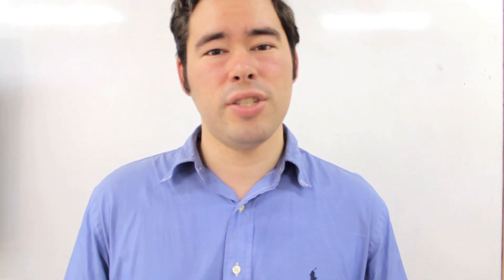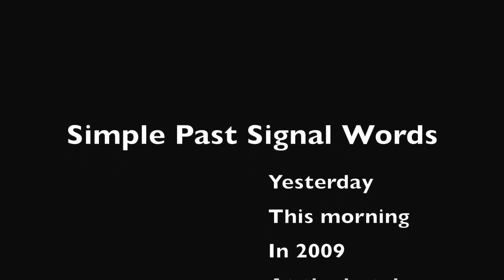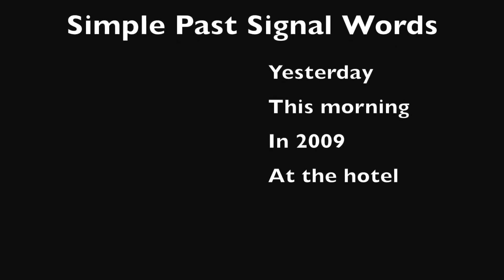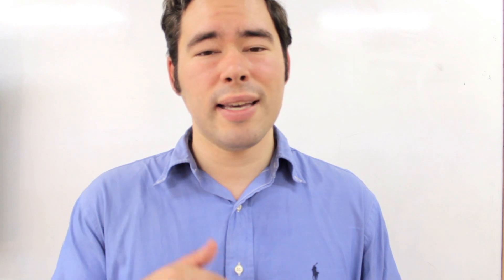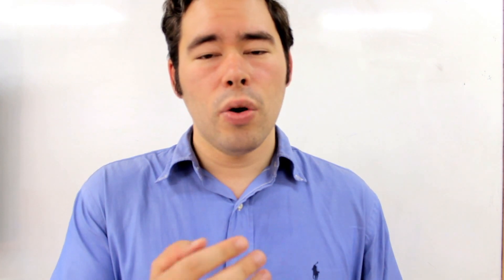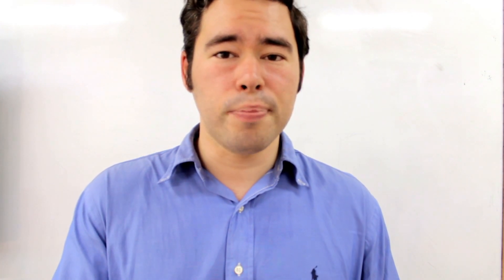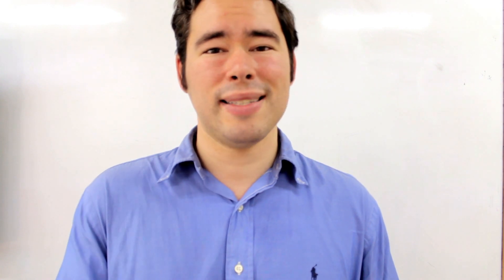While you walked on the beach, did you listen to music? This is another case of simple past being used to describe something happening at the same time something else is happening, and you're simply reporting it or asking about it. Signal words: yesterday, this morning, in 2009, at the hotel. Notice all these signals are time and place. So anything that indicates time, season, or places — those are your signal words to know that you might just be dealing with simple past.